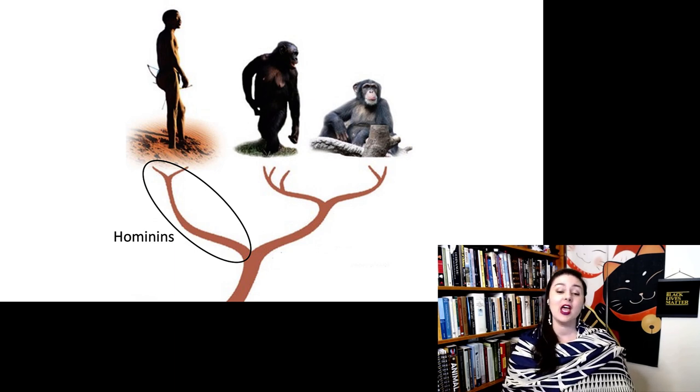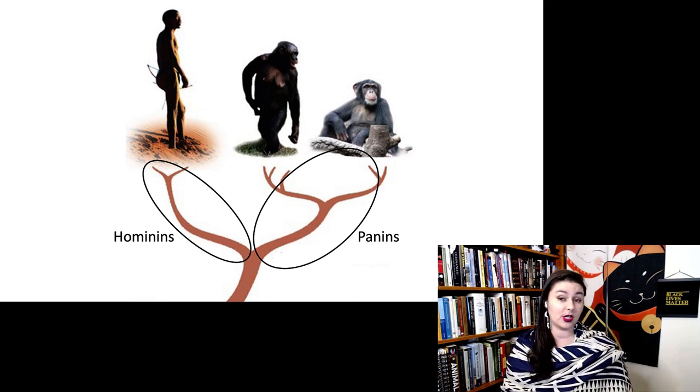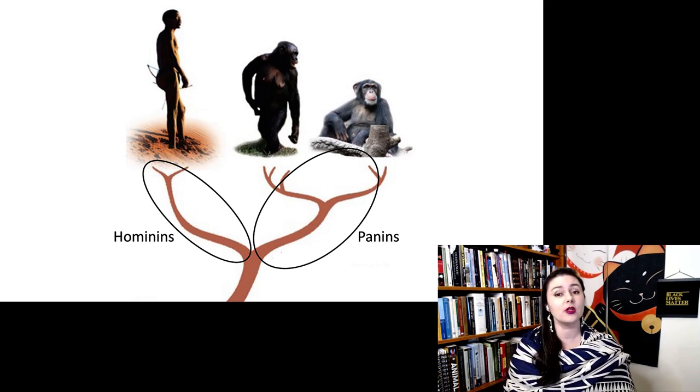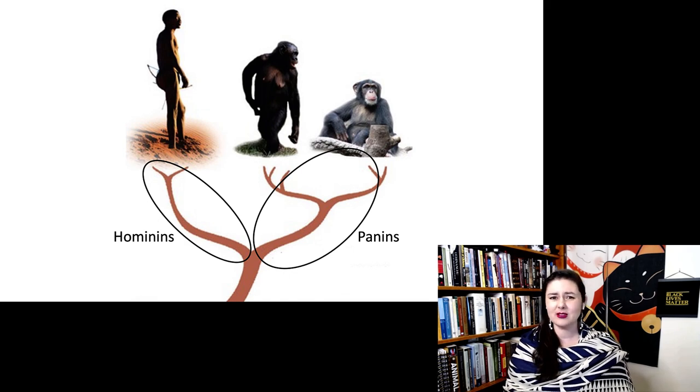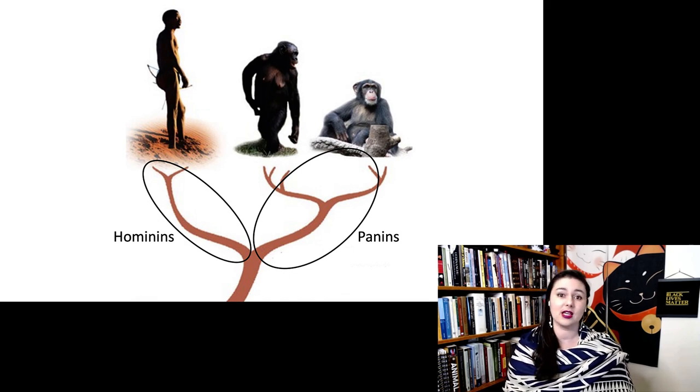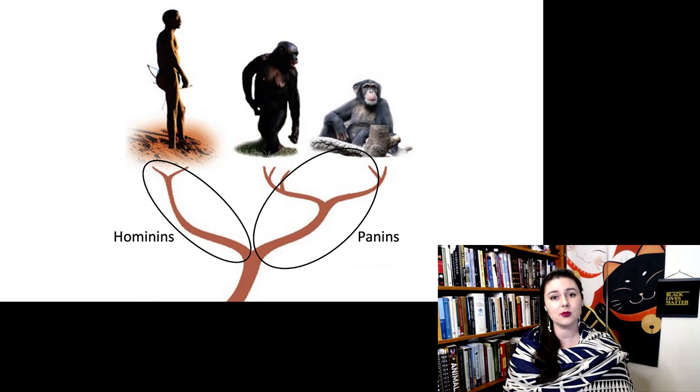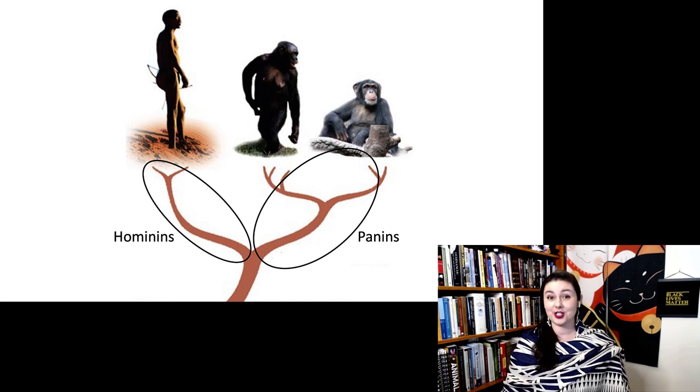And of course, everything that is on the branch more closely related to chimpanzees, we would call those panins. Sadly, we really haven't been able to find good fossil candidates for ancestral chimpanzees, so it does make it a little bit harder to compare. This is partially because chimpanzees live in forested areas and it's just much harder to find fossils and it's actually much less likely that fossilization will occur if you live in a hot and humid rainforest environment.